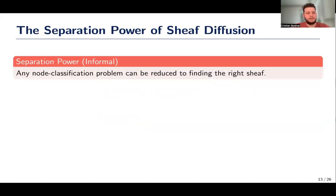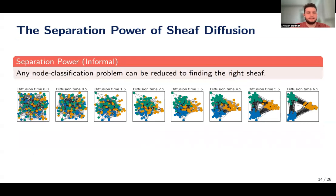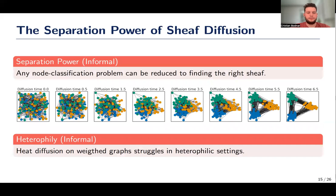Based on the properties of the sheaf Laplacian kernel, we show that any node classification problem can be reduced to finding the right sheaf. In other words, there always exists a sheaf that can linearly separate the classes in the infinite time limit of its diffusion process, as shown in this figure. Furthermore, we show that simple heat diffusion on a weighted graph struggles in heterophilic settings.